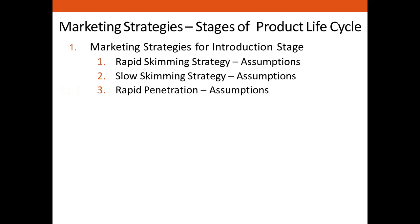The third strategy is rapid penetration — launching the product at a low price with low promotion. The purpose is faster market penetration to get a larger market share. The marketer tries to expand the market by increasing the number of buyers. Assumptions: the market is large, buyers are price sensitive, there is strong potential for competition, and the market is not much aware of the product. The fourth strategy is slow penetration — introducing a product with a low price and low level of promotion. The low price increases product acceptance and low promotion helps realize more profits even at a low price.